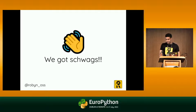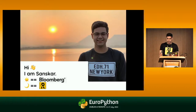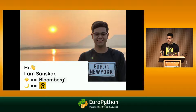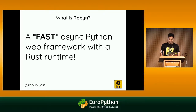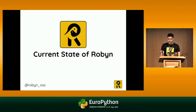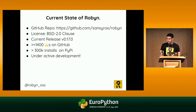I've got Robin stickers — feel free to take them after this talk. A few things about me: my name is Sanskar. In the morning I work as a software engineer at Bloomberg, where I help create tools for bond trade evaluation. During the night I maintain an open source software called Robin. Simply put, Robin is a fast async Python web framework with a Rust runtime. Robin is currently hosted on GitHub, has a BSD 2-clause license, around 1,400 stars on GitHub, around 300,000 installs on PyPI, and most importantly it's under active development.